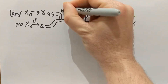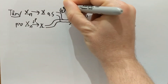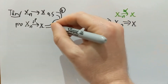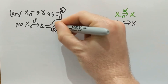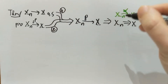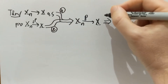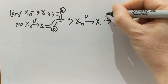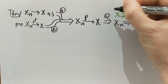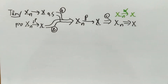It's three statements in one. Statement A: almost surely implies in probability. Statement B: Lp implies in probability. Statement C: in probability implies weak. Three statements. So let's prove all three separately.